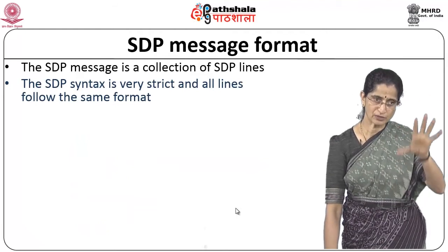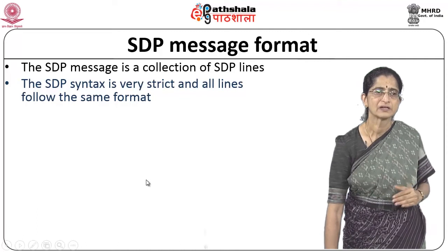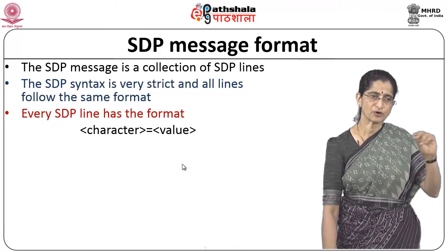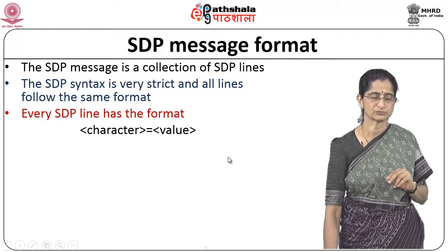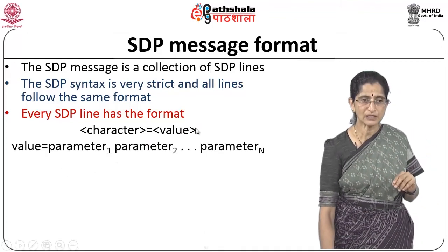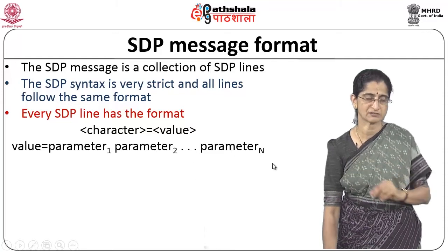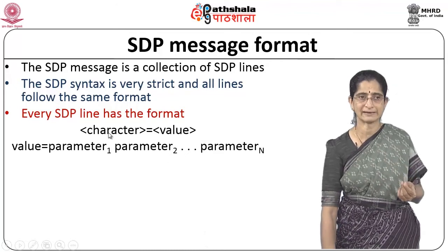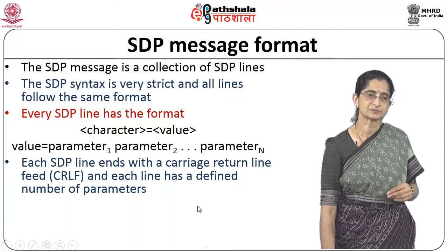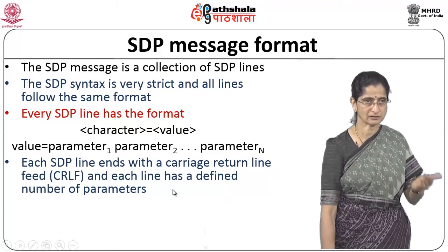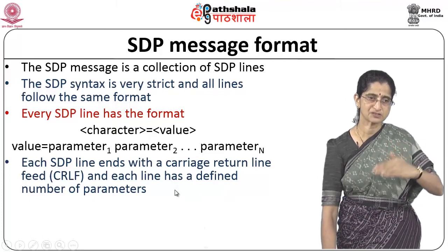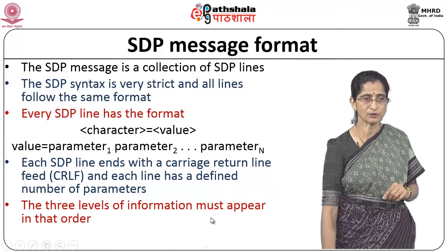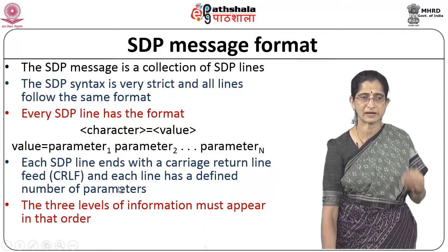An SDP message is basically a collection of SDP lines with a very strict syntax. All lines have the same format: a character, equals sign, and a value. The value consists of parameters 1 through n, which vary depending on the character. Each SDP line ends with a carriage return line feed to distinguish between different lines. The three levels of information — session, timing, and media — must appear in that particular order, as mandated by the SDP syntax.